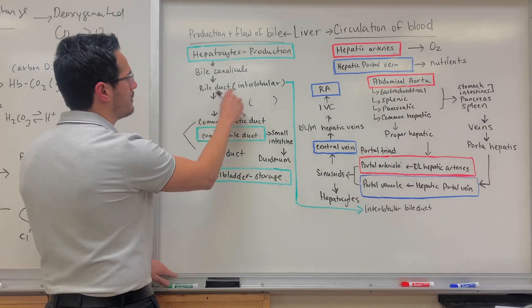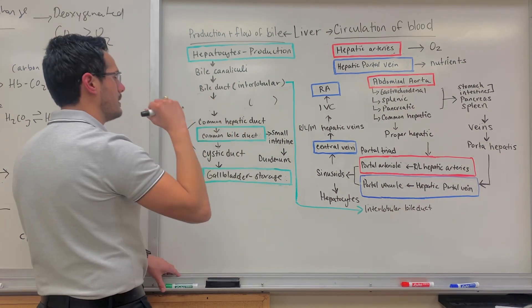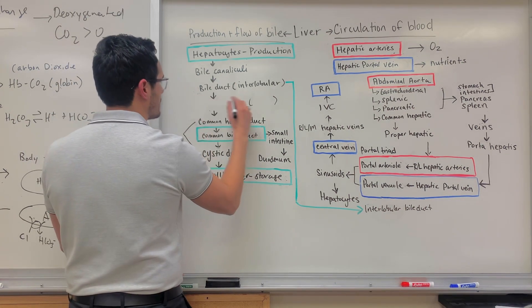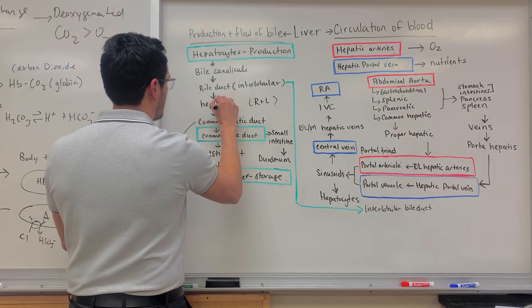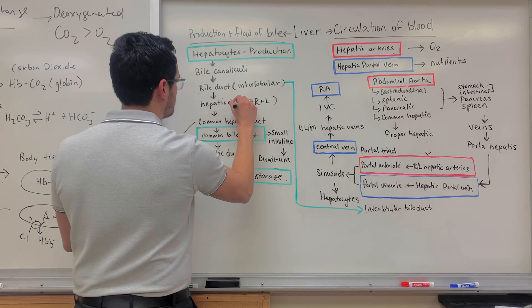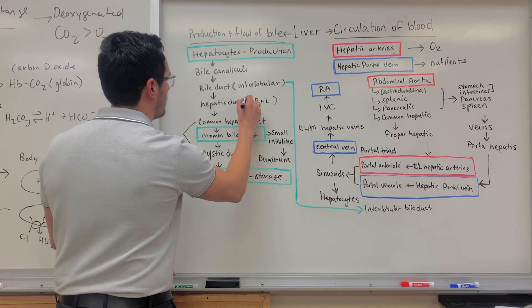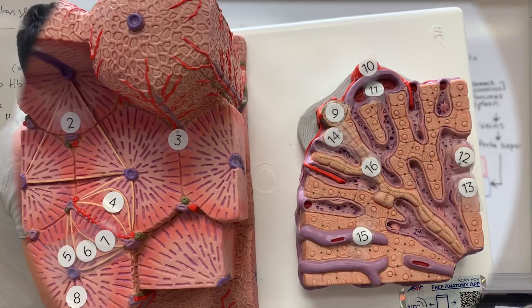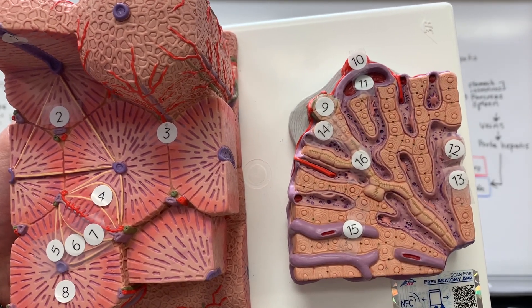So from the interlobular bile duct, it'll then get into the next particular structure, which is the right and left hepatic ducts. So now that I've shown you the schematic of how bile is produced and where it travels, let's look at some of the different models.